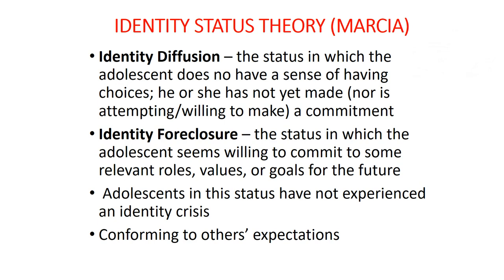An example of identity foreclosure: a person is uncertain about their career and is in some sort of limbo, then a family crisis occurs and they are told they must take over the family business. Thirty years later they are still there. That person took on a role without going through the exploration that is normally required — that is the prototype of identity foreclosure.